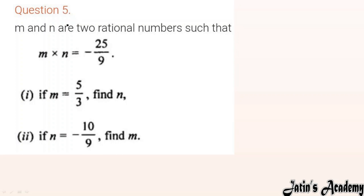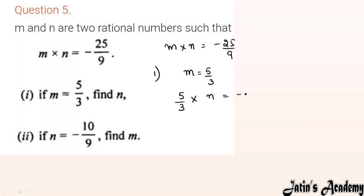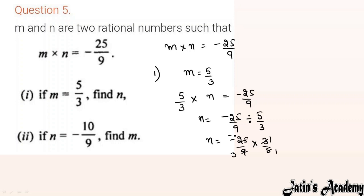Question 5: m and n are two rational numbers such that m × n = minus 25/9. Part (i): m = 5/3, find n. Substitute: 5/3 × n = minus 25/9. Move 5/3 to divide: n = minus 25/9 ÷ (5/3). Divide converts to multiply, take reciprocal. Cancel 3 and 9, cancel 5 and 25. Answer: n = minus 5/3.